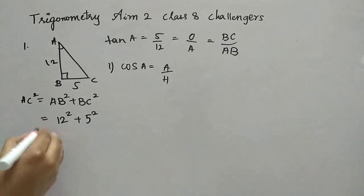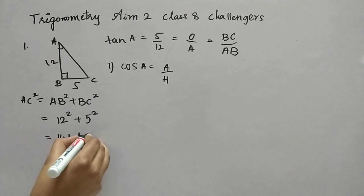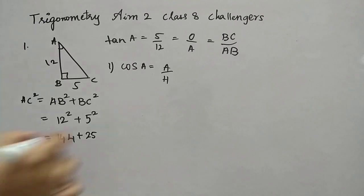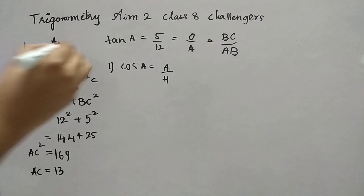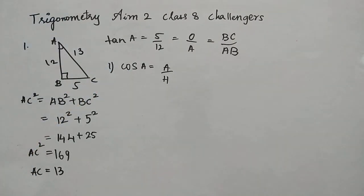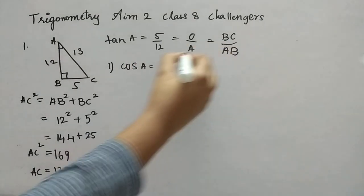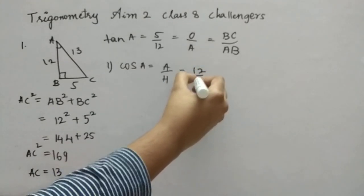This one we have to find. 12 square is 144 plus 5 square, 25. Right, so next what we have to see? Add it up. It is going to be 169. Now this square, if you transpose to RHS, it becomes square root. So square root of 169 is 13. So AC is 13, which is found. Now, what we have to do? Just put it in the formula. That's it. A is 12, 12 by 13.